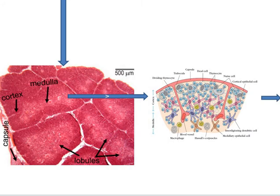Immature T-cells, called thymocytes because of their site of maturation, pass through defined developmental stages in specific thymic microenvironments as they mature into functional T-cells. The thymus is a specialized environment where immature T-cells generate unique antigen receptors called T-cell receptors or TCRs, and are then selected on the basis of their reactivity to MHC-peptide complexes expressed on the surface of thymic stromal cells.